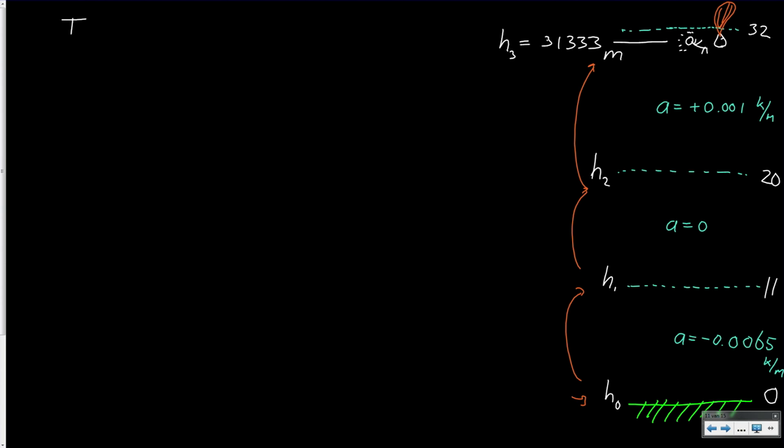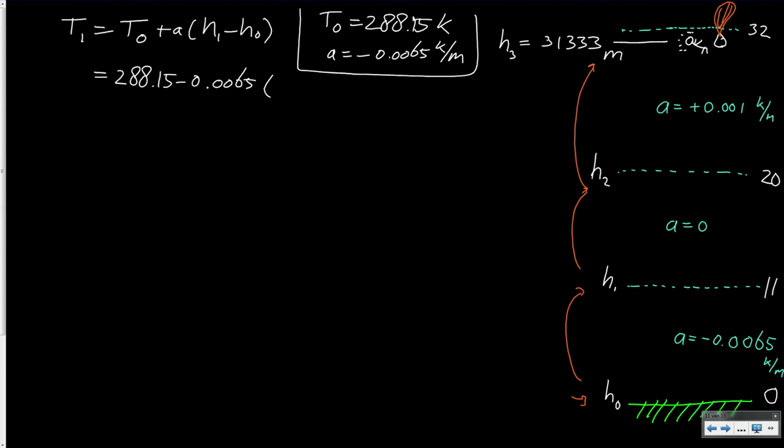The temperature T1 is given as T0 plus A times the difference in altitude. We use the sea level values which are given: T0 is 15 degrees Celsius, which is 288.15 Kelvin. The lapse rate was given as minus 0.0065 Kelvin per meter. Using this equation we can calculate the temperature at the top of the troposphere: T1 equals 216.65 Kelvin.